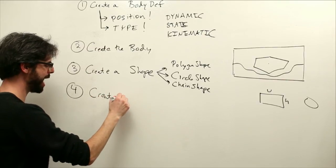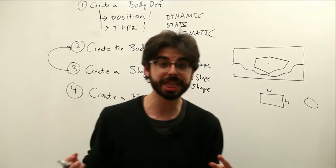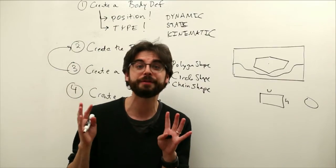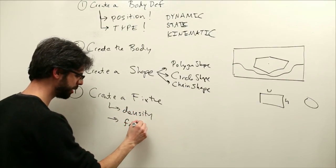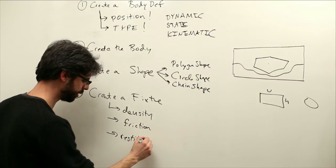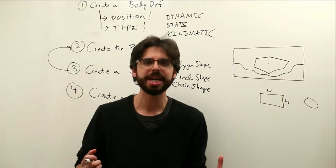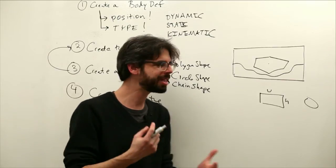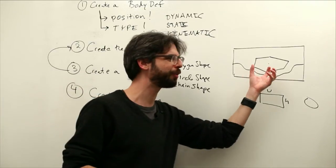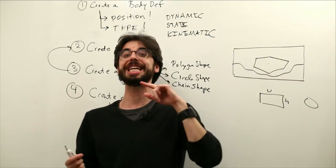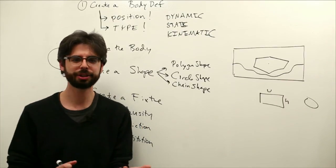So we need to create a fixture. A fixture you can think of as the glue that binds the shape to the body. The interesting thing about the fixture is the fixture is the place where we get to set some other physics parameters. Notably, density, friction, and restitution. Density, friction, and restitution. So density you can imagine, if an object is more dense, it's going to have a higher mass based on how big it is. So density can affect the behavior of something by making it have a kind of weightier feel to it in the physics world. Friction is just how much friction does that body experience when it comes into contact with another, sorry, does that shape experience when it comes into contact with another shape.